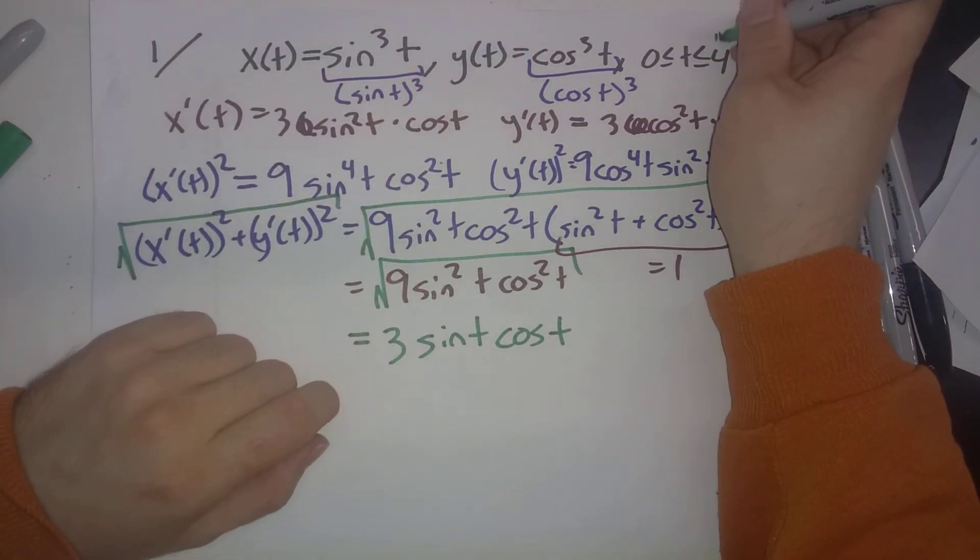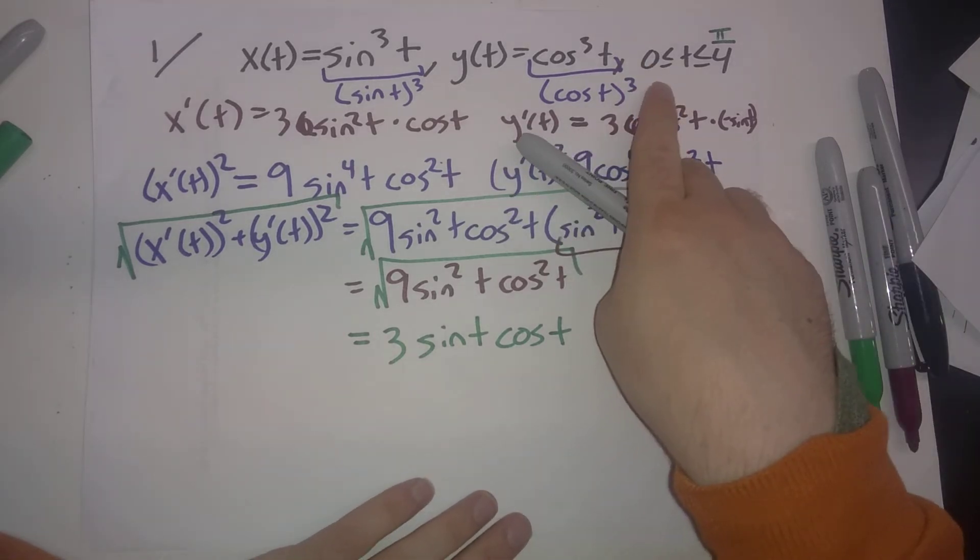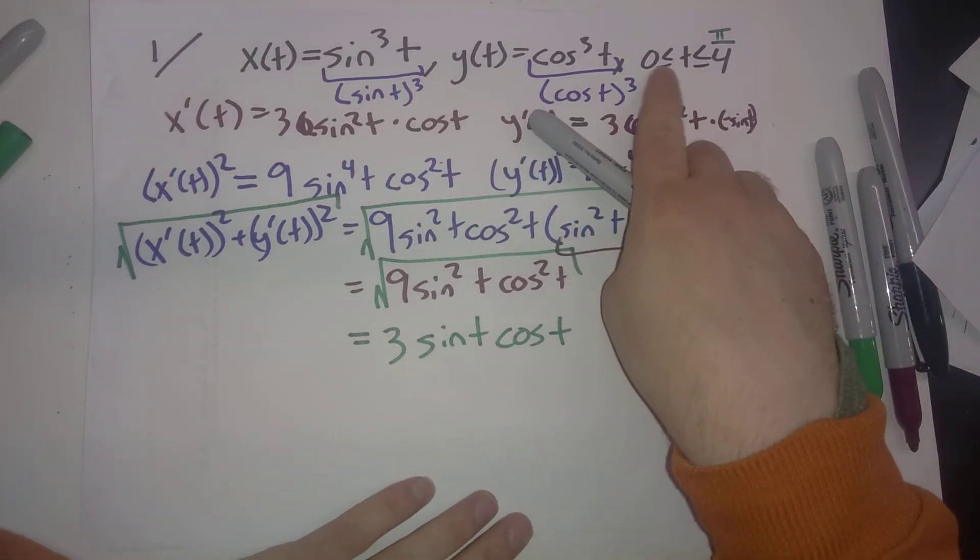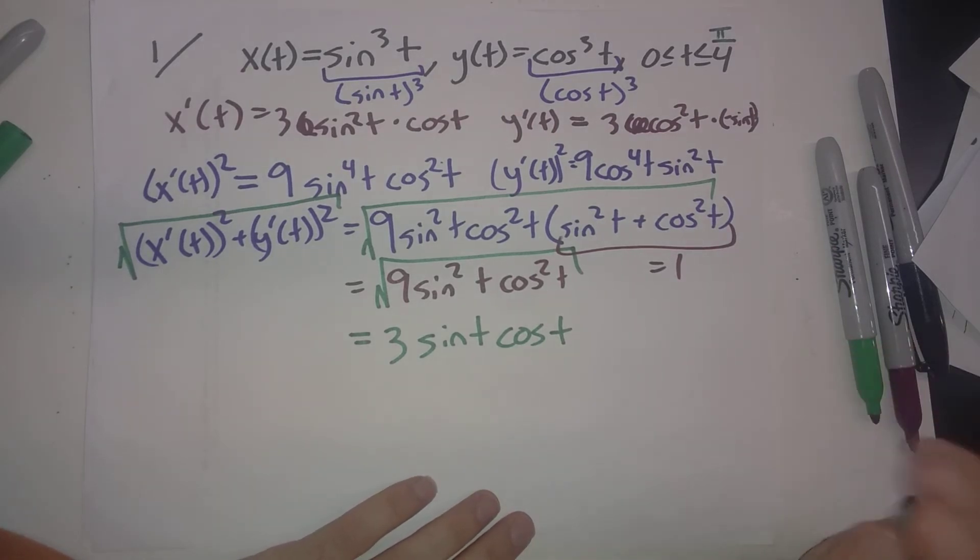When I copied that down, t should run from 0 to π/4, not to 4. My apologies. Why was I looking at this? When t is between 0 and π/4, both sine and cosine are positive, so we don't have to worry about absolute values or negatives when taking the square root.